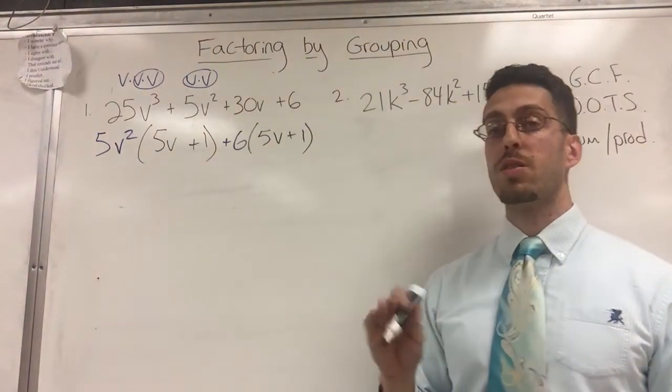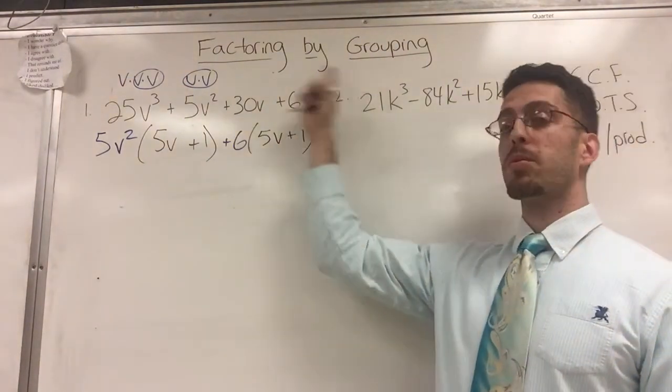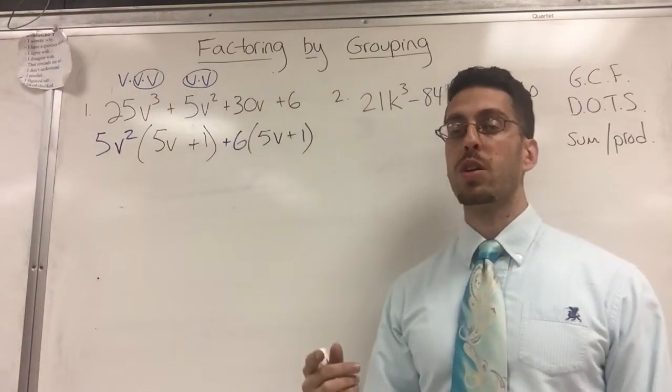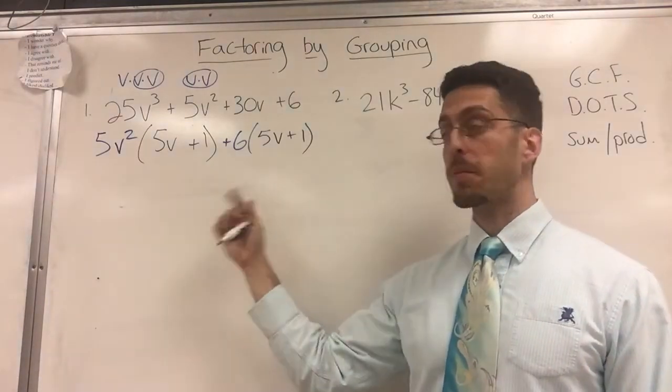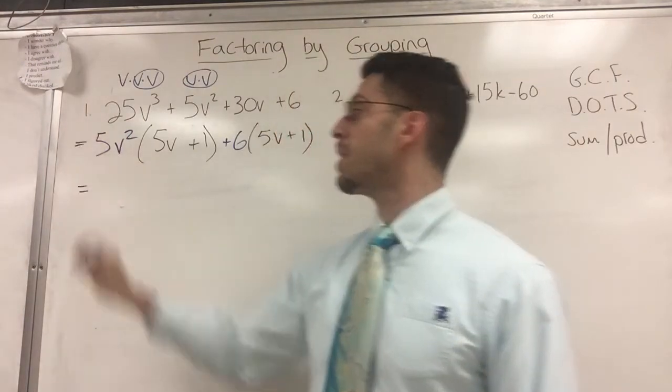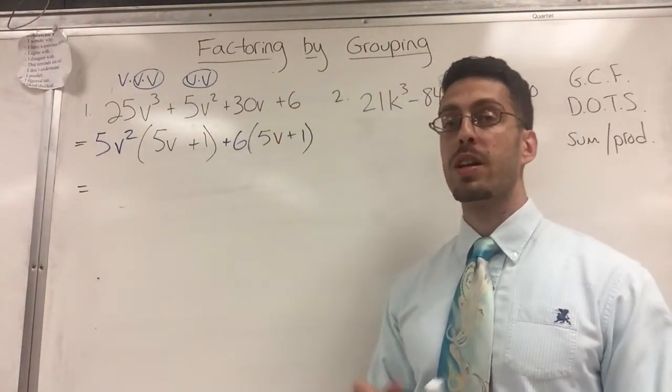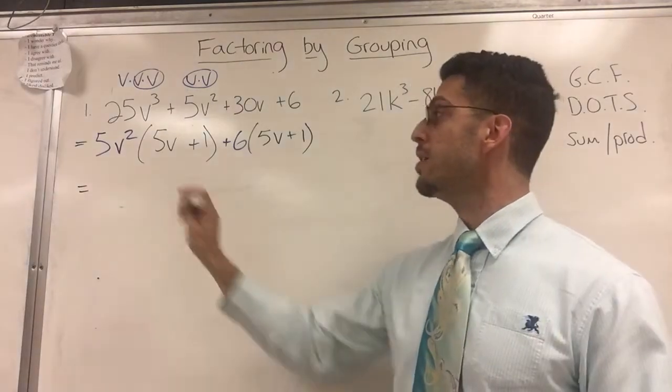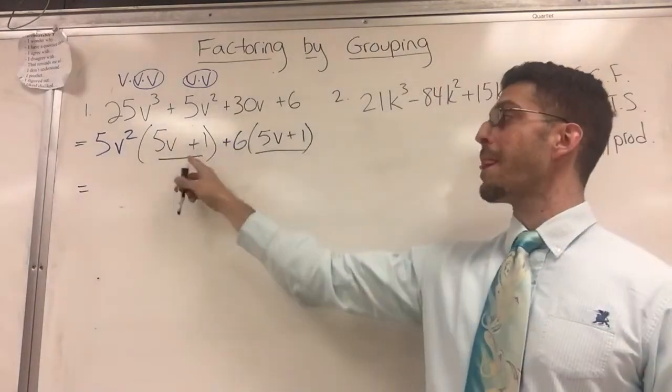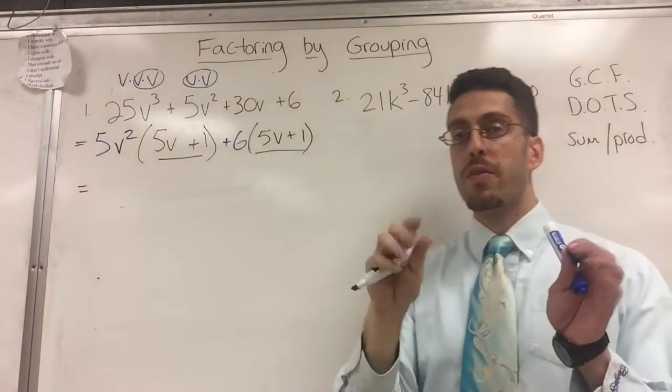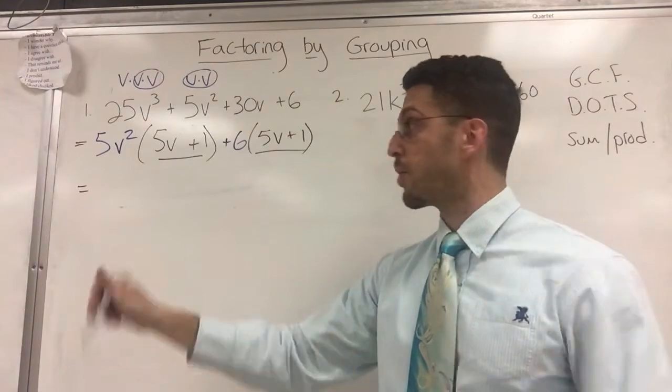Here is the trick. A lot of people call this, instead of factoring by grouping, they just say factor completely. That's a clue to tell you you have more than one step. That was the first step. There is another step, and if you look carefully, you should see something in common. Again, greatest common factor. This time, the common factor is an entire binomial. There's a 5V plus 1 in both terms, so that 5V plus 1 gets factored out in front.